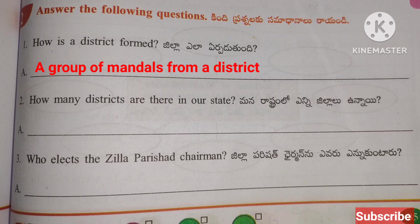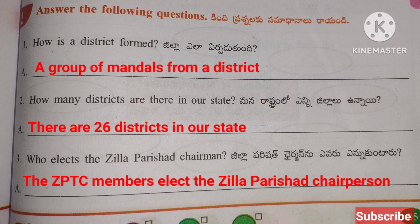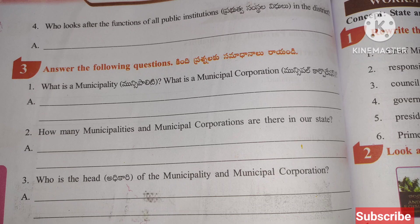How many districts are there in our state? There are 26 districts in our state. Who elects the Zilla Parishad Chairperson? Who looks after the functions of all public institutions in the district? The District Collector. What is a Municipality? What is a Municipal Corporation?